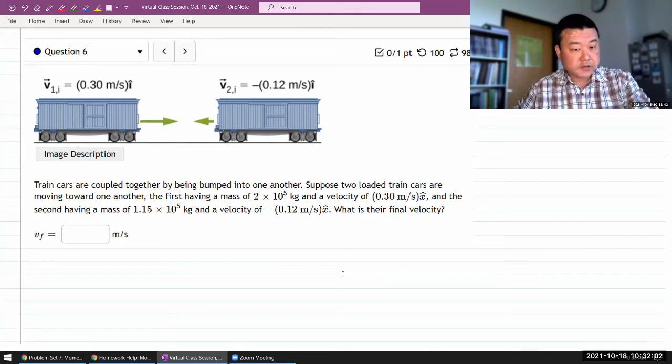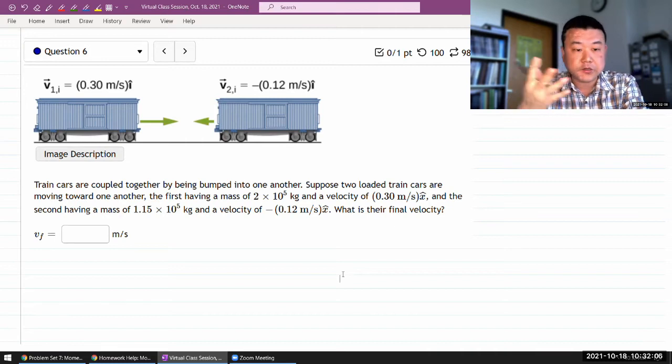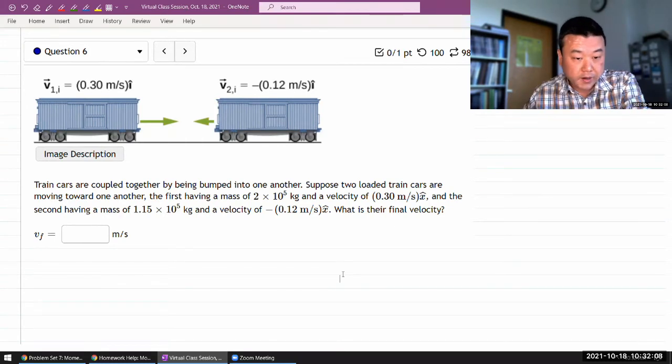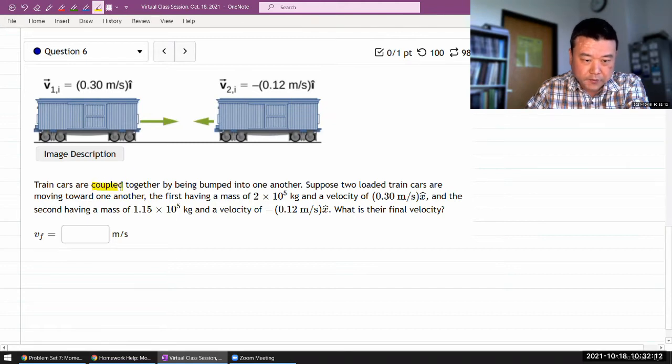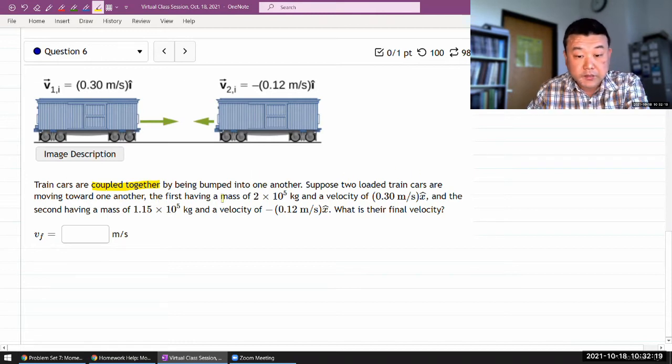So this is how the thing is set up. You see the figure here and the question says the train cars are coupled together. That's an important piece of information by being bumped into one another. Suppose two loaded train cars are moving toward one another. First having, oh, they have different mass.